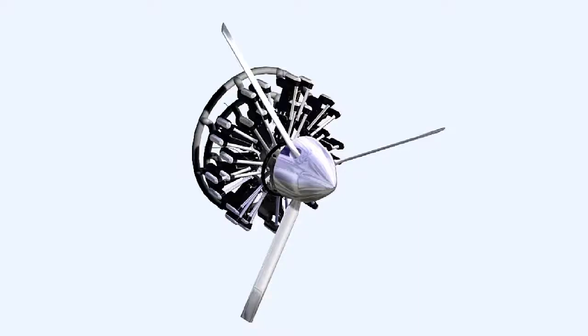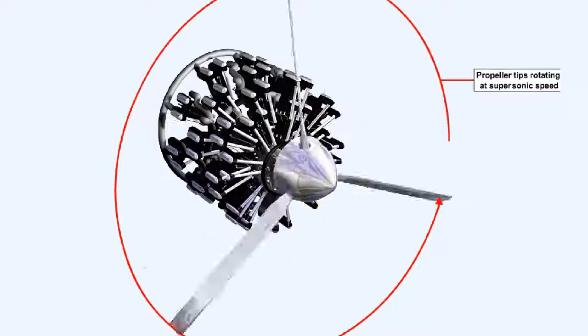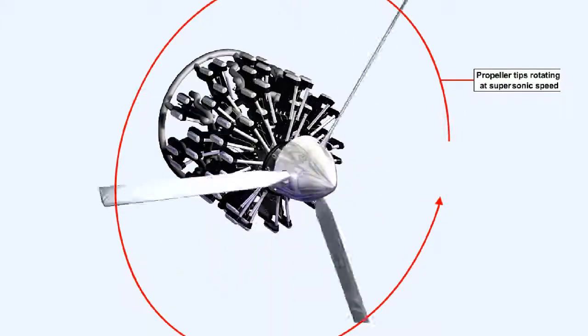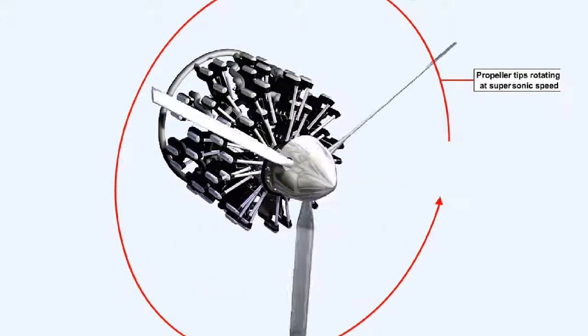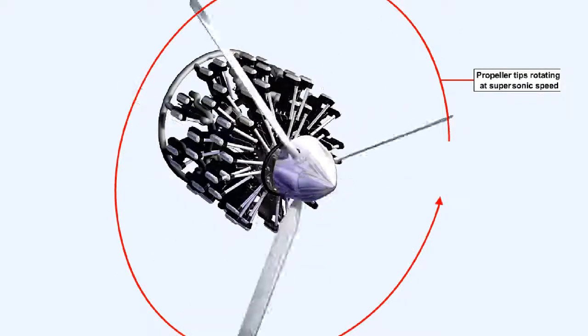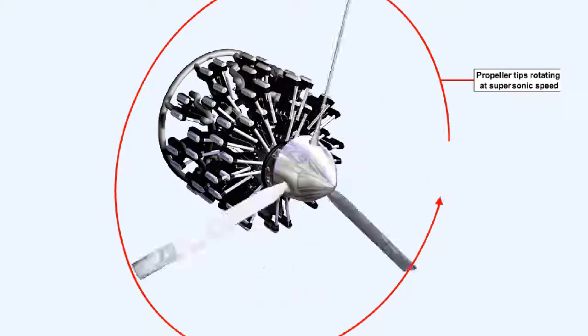The more powerful an aircraft engine becomes, the larger must be its propeller if it's to absorb the torque output of that engine. Unfortunately, if the propeller diameter is increased and the engine rotates at the same speed as it did previously, the propeller blade tips would be moving at sonic or even supersonic speed. This is very inefficient as well as being noisy and potentially damaging to the blades.